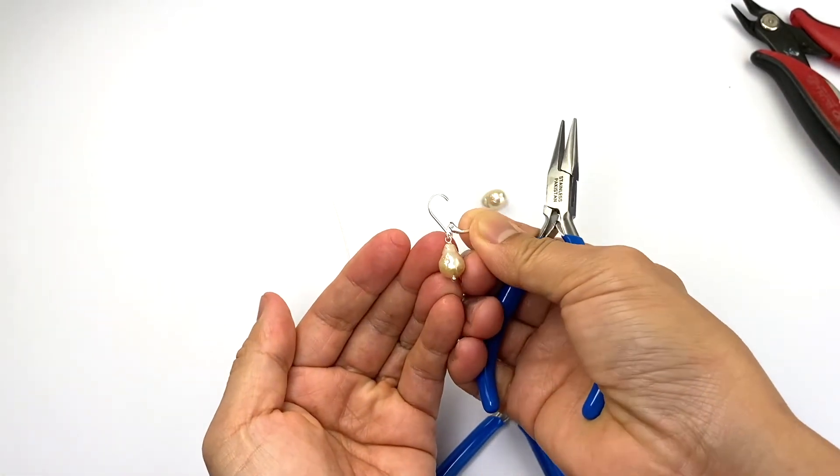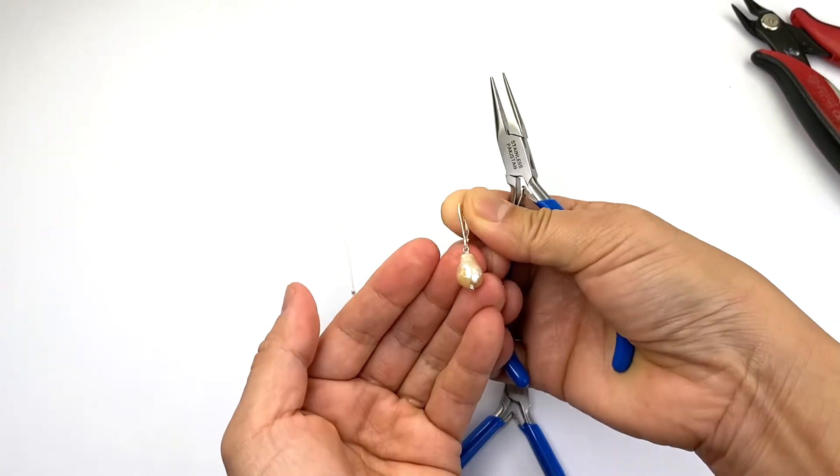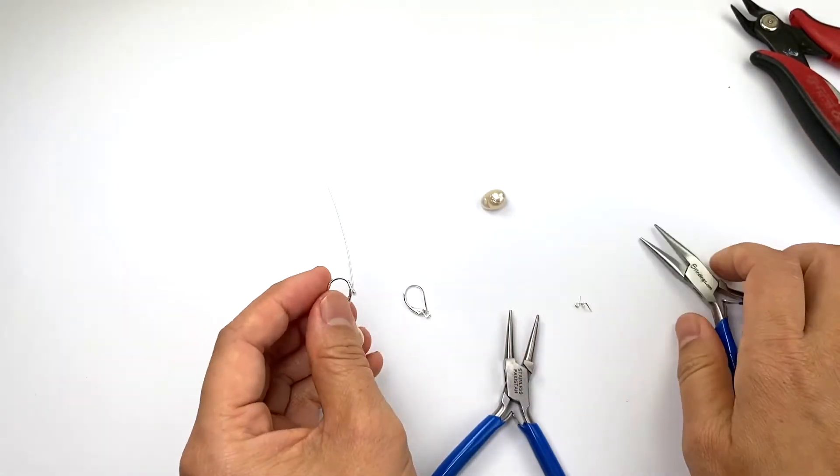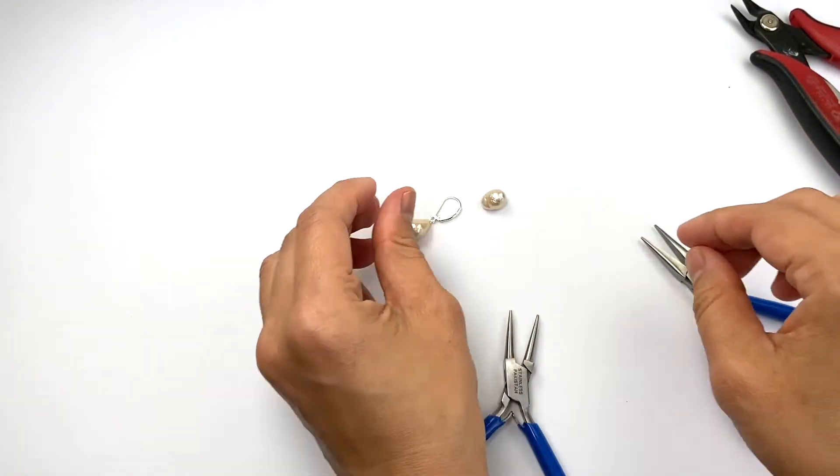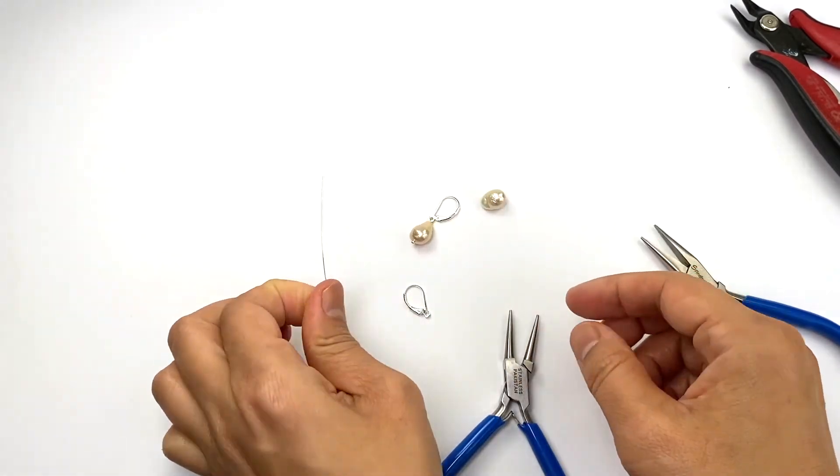The great thing with lever back is that it has a clasp so it holds tightly and hugs the earlobe.